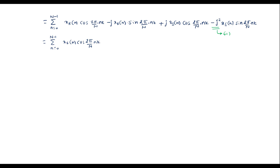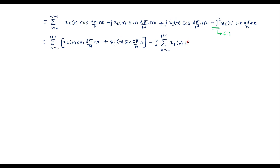Multiplying j·x_I(n) with both terms gives: j·x_I(n)·cos(2π/N · nk) + j²·x_I(n)·sin(2π/N · nk). Since j² = −1, the last term becomes +x_I(n)·sin(2π/N · nk). Separating real and imaginary parts, the real terms combine and the j terms are grouped with a minus sign.